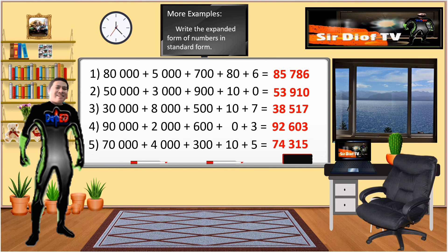Number 2: 50,000 + 3,000 + 900 + 10 + 0 = 53,910. Number 3: 30,000 + 8,000 + 500 + 10 + 7 = 38,517.